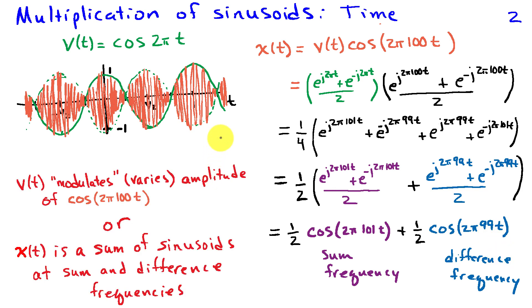We have two equivalent ways of thinking about this product of sinusoids in the time domain. One way is to think about our sinusoid V of t as modulating or varying the amplitude of the sinusoid that was at frequency 100 hertz. And that's illustrated by this graph that we drew of the sinusoid.